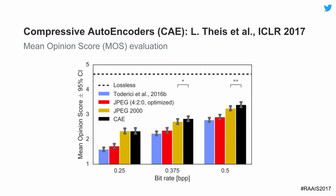When we evaluate with human subjective testing, humans prefer our approach — shown in black — even over JPEG-2000, shown in yellow. These are first steps, but there are a lot of other teams also thinking along these lines, and it will be a very interesting field going forward.